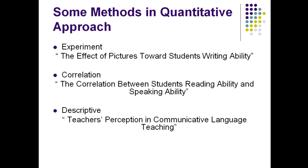In general, for quantitative research, you may already be familiar with experiment, correlation, and descriptive. Experiment usually deals with effect or influence — looking at whether a method, approach, or thing has an effect on something else, such as a student's writing. If the title involves 'effect,' that is experiment. Correlation looks at the relationship between one variable and another.